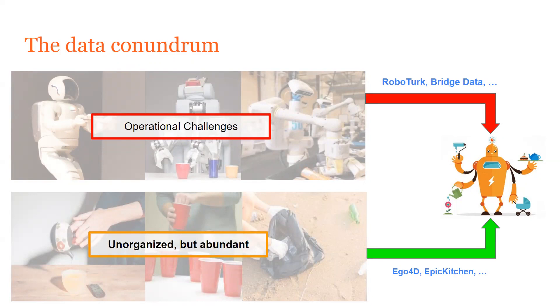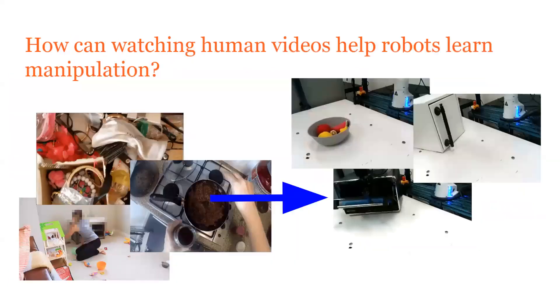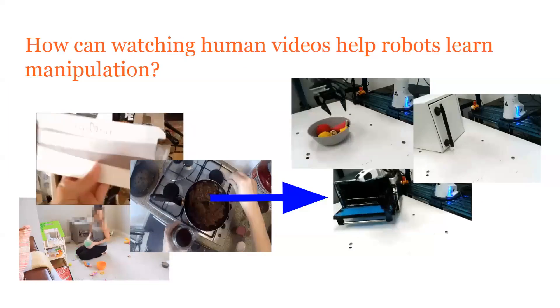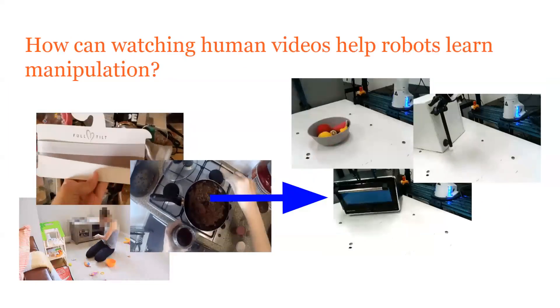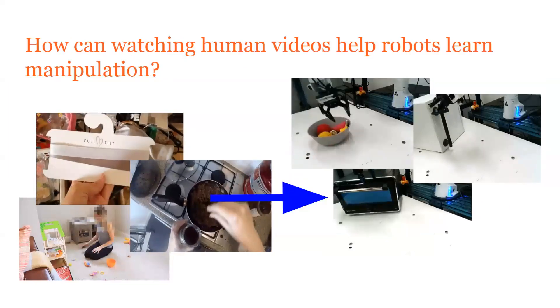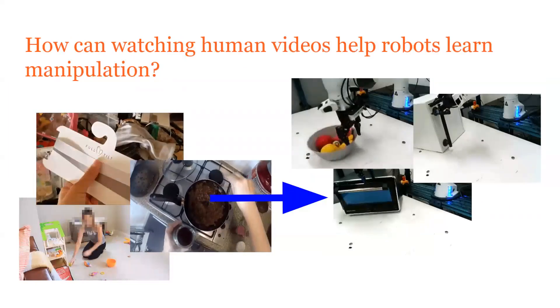This data is abundant but unorganized. So we asked the question: how can watching these human videos help robots learn manipulation?